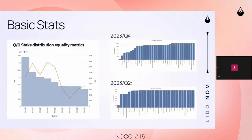Also in the basic stats are the distribution equality metrics. We use two metrics for that: the Gini and the HHI — the Herfindahl-Hirschmann index. We try to get these as low as possible; a lower Gini and HHI represents a more equal distribution, where zero would be a perfect distribution.